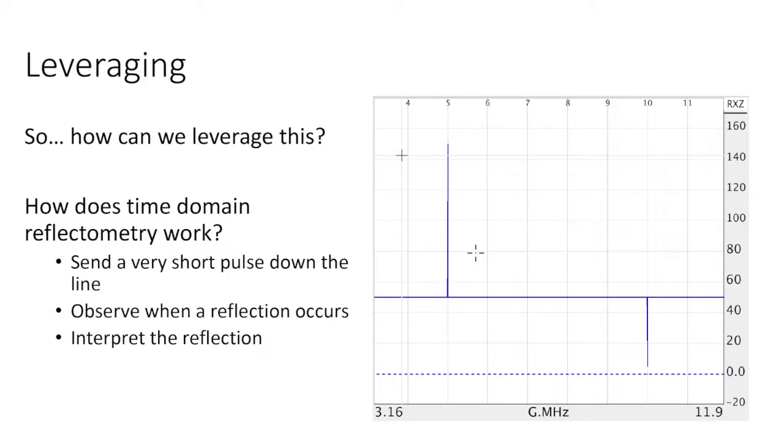Now, if the circuit is perfectly matched, there would be no reflection. If the circuit has a place where there is a lower impedance than the transmission line, for example, there will be a negative going pulse. And if there's a place in the circuit with a higher than Z-naught impedance, there would be a positive going pulse.